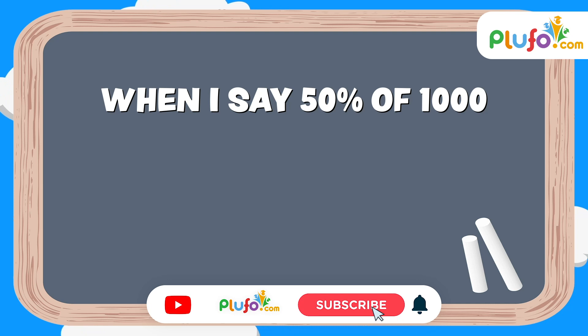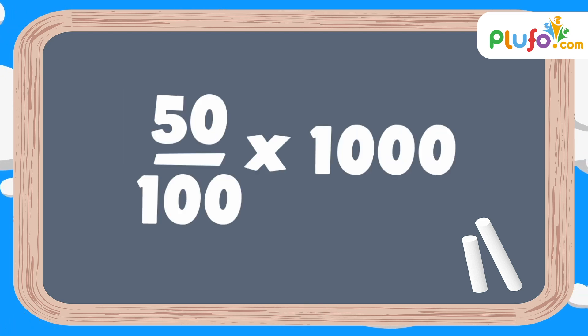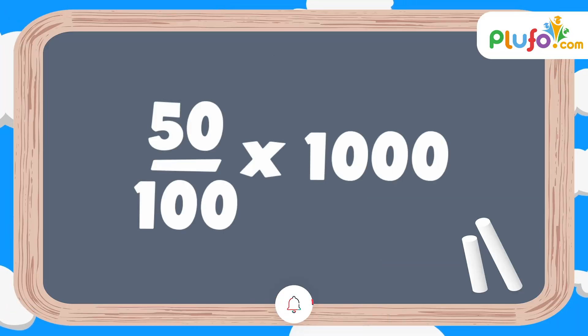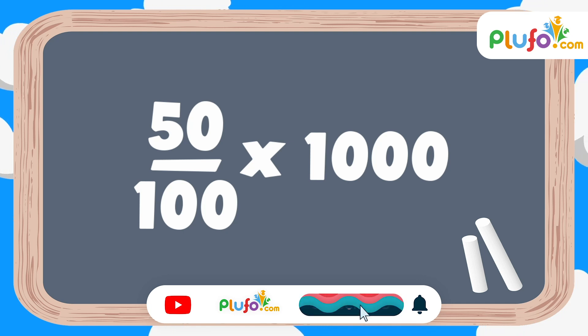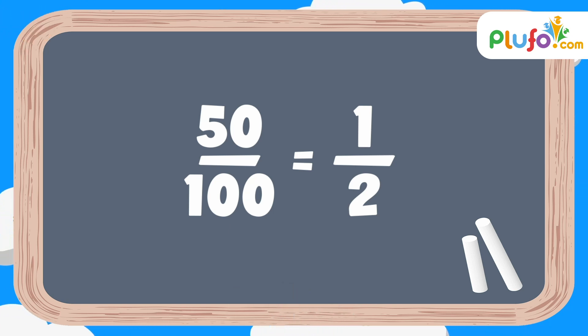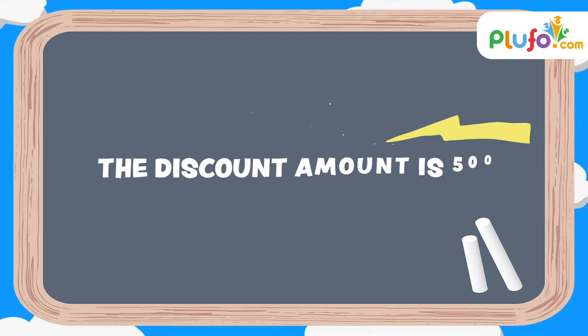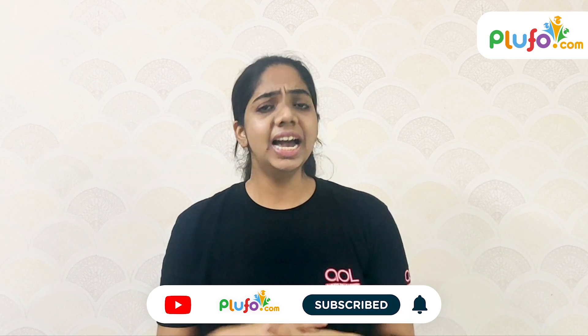Percentages are represented as fractions. When I say 50% off ₹1000, 'off' means multiplication — 50 by 100 into 1000. To calculate the discount on my t-shirt which is 50%, I write 50 by 100 into the price of the t-shirt, ₹1000. Simplifying: 50 by 100 = 1 by 2, and 1 by 2 into 1000 gives 500. So the discount amount is ₹500, and the final price is 1000 minus 500 = ₹500.